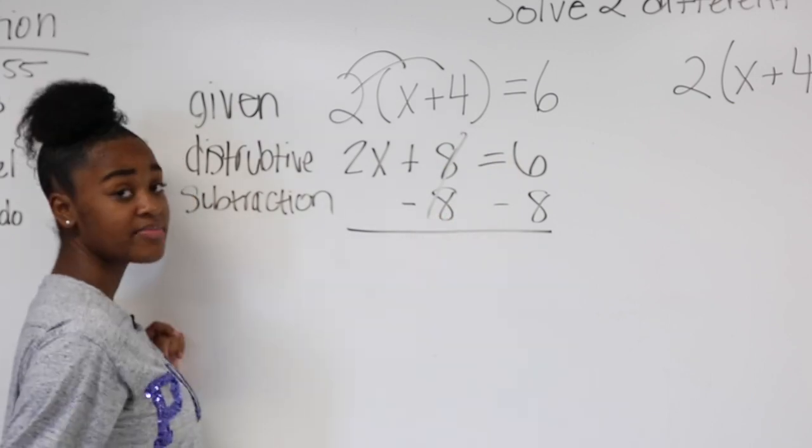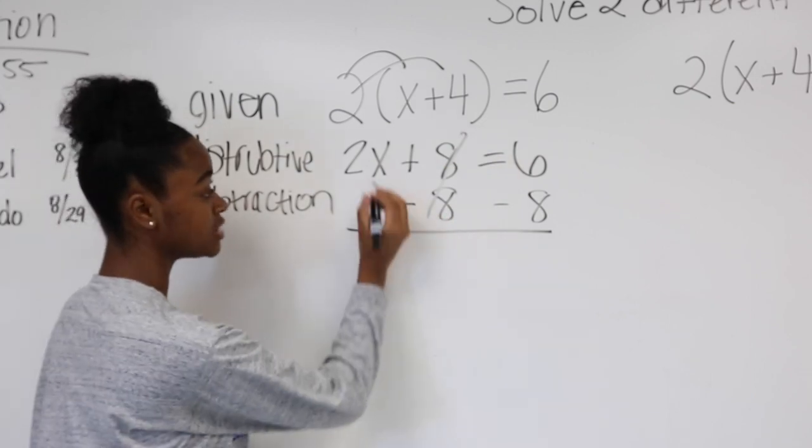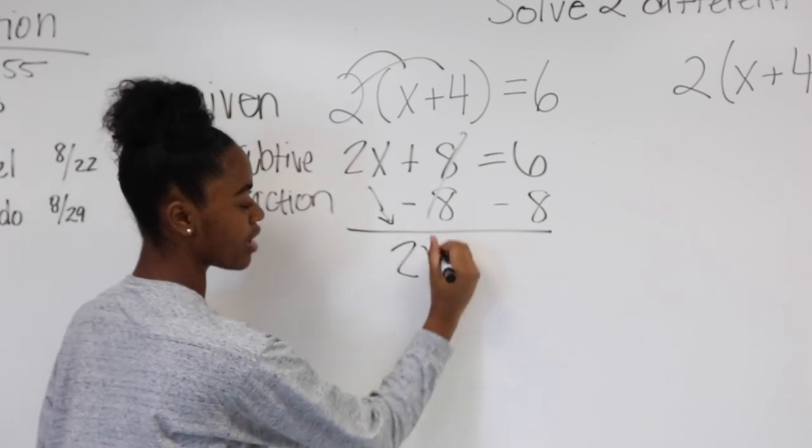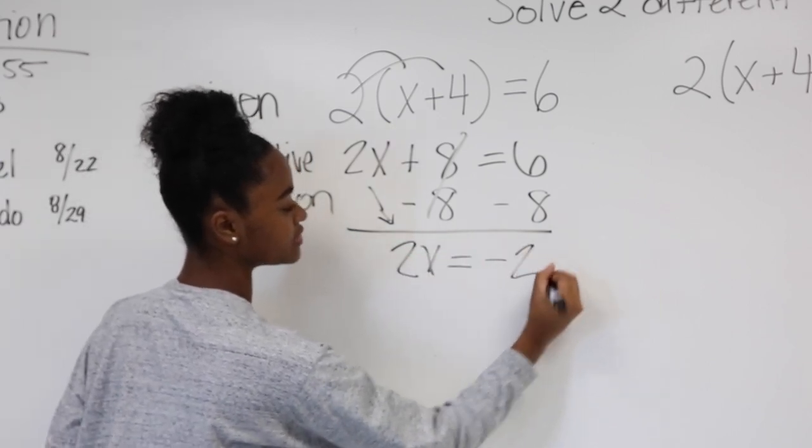So that crosses out completely because it's a positive and a negative. So you bring that 2x down. That's negative 2.